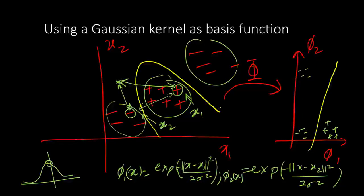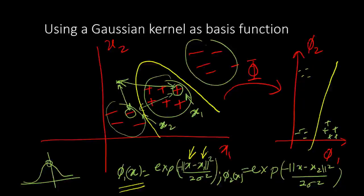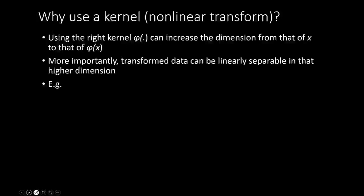Notice that phi is defined in terms of two data points: the point on which we compute the feature, and a referral data point. These referral data points are going to be the support vectors after the transformation. This means the input to the SVM will not be the raw input x, but the feature input phi, which can have a much larger dimension than x.